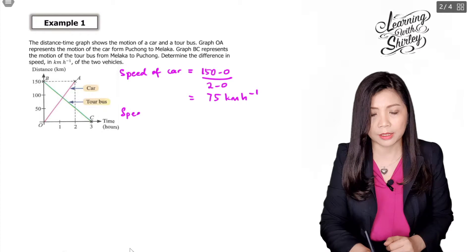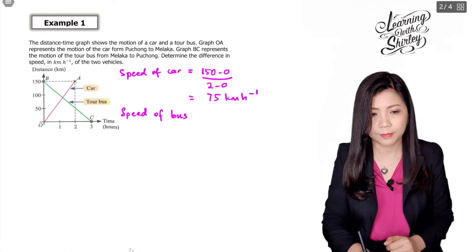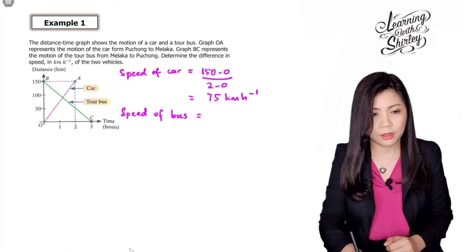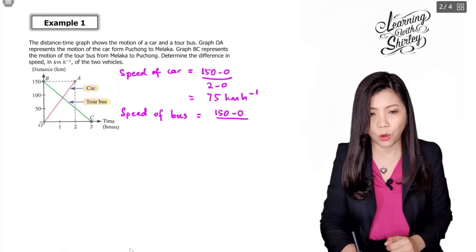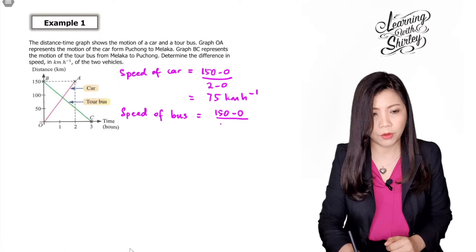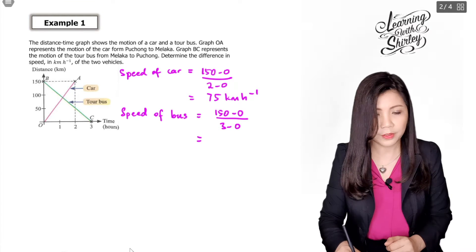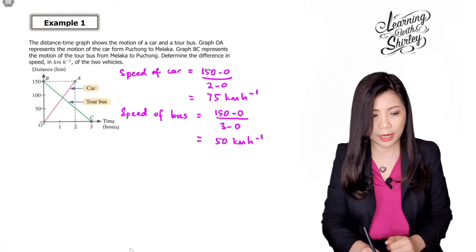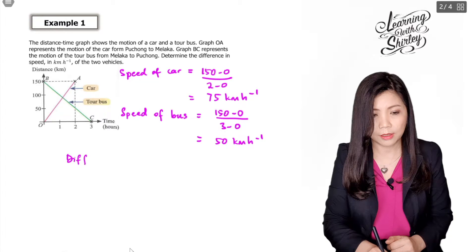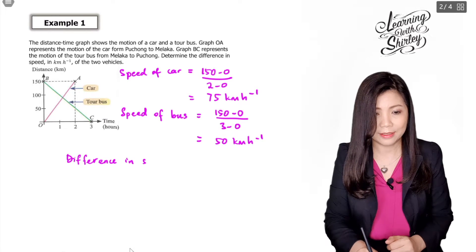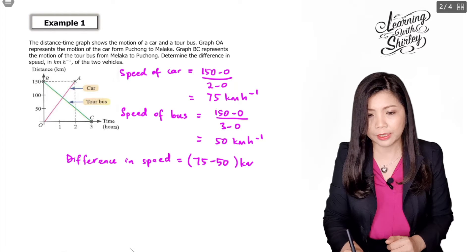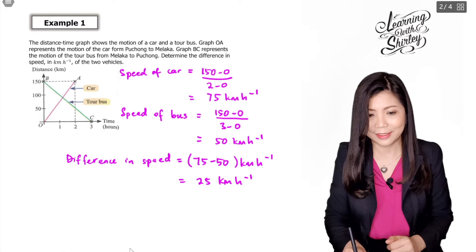Now I'll find the speed of the bus, represented by the green line BC. That's 150 minus 0 over 3 minus 0, which gives 50 kilometers per hour. To find the difference in speed: 75 minus 50 equals 25 kilometers per hour. That's the answer.